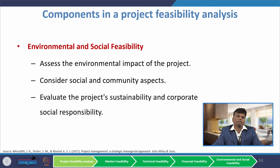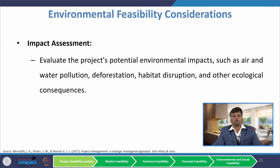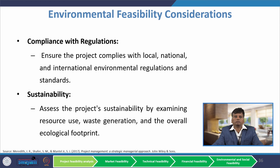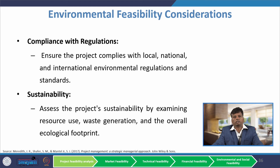In environmental feasibility, the first consideration is impact assessment: evaluate the project's potential environmental impact such as air and water pollution, deforestation, habitat disruption, and other ecological consequences. The second consideration is regulatory compliance — ensure that the project complies with local, national, and international environmental regulations and standards. The third is sustainability: assess the project's sustainability by examining resource use, waste generation, and the overall ecological footprint.